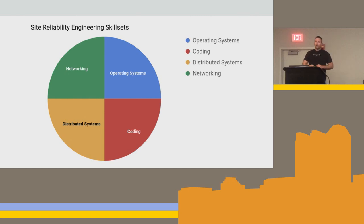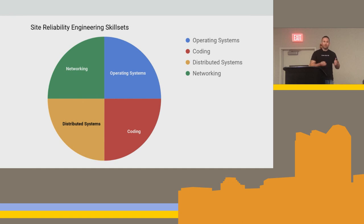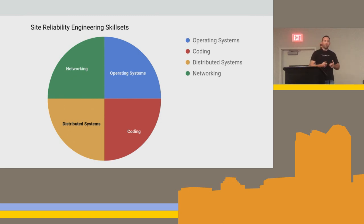When I think about the skill sets I look for in a site reliability engineer, it comes down to four things. First is operating systems — you need a solid fundamental understanding of operating systems, whether Linux, Windows, or whatever. Second is coding — you have to be able to code, build things, contribute, and build a lot of the automations. Third is distributed systems — many of the applications you all run are distributed systems by nature, talking to other services and microservices. And fourth is networking, which is what I'm here to talk about today — everything you run probably depends on the network at some point.